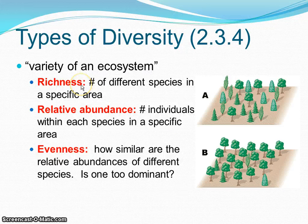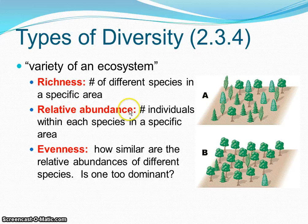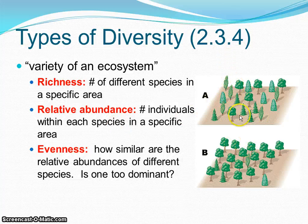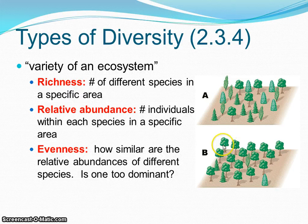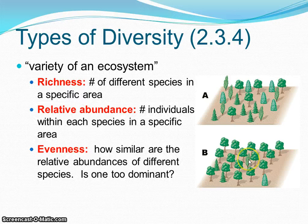If we measure relative abundance as our diversity measure — that's the number of individuals within a specific species — looking at plot A, each type of different tree has about four or five of each species. But if I look at plot B, I find that the fluffy tree has 16 of those trees — that's the relative abundance of that tree — versus another tree with only one, and another tree with only one.